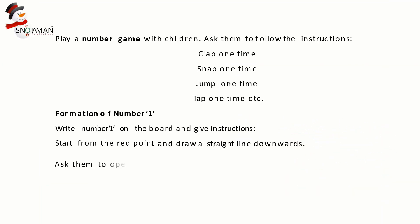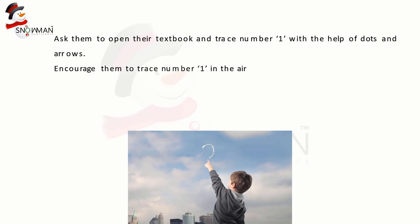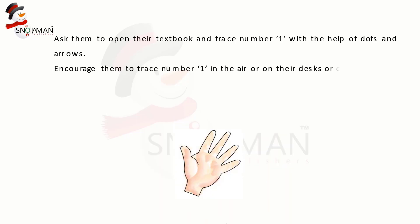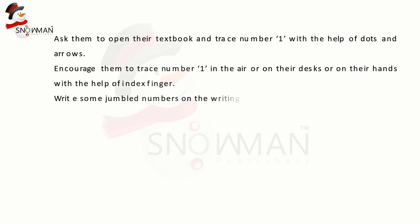Ask them to open their textbook, count, color, and match objects with number one. Ask them to open their textbook and trace number one with the help of dots and arrows. Encourage them to trace number one in the air, or on their desks, or on their hands with the index finger. Write some jumbled numbers on the writing board and ask children to recognize number one.